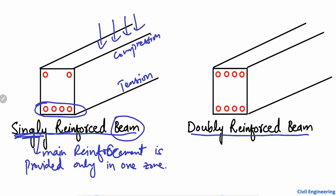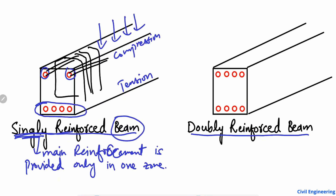These tensile reinforcement bars act to increase the tensile capacity of the beam. But why are there two bars at the top? These two bars are only provided to encase the stirrups — the transverse reinforcement. We always have stirrups in our beam, and to hold the stirrups we must provide two bars in the compression zone. These top bars are not provided to take any tensile or compressive stresses; they are only there to encase the transverse reinforcement.